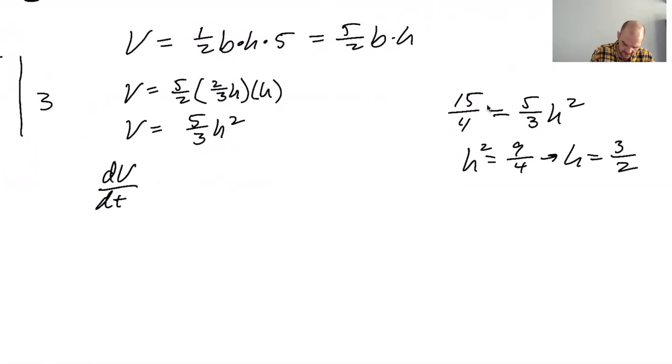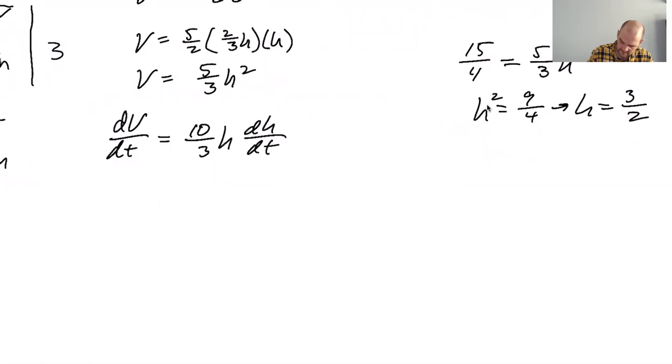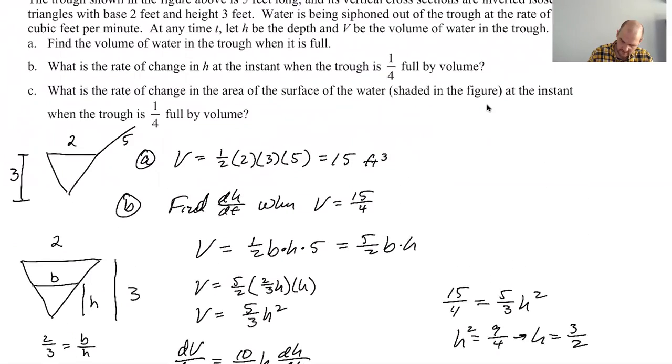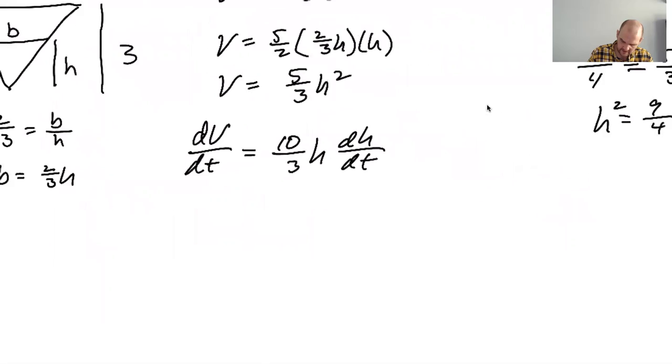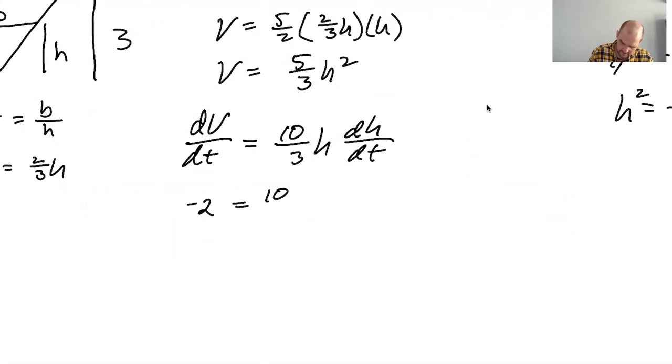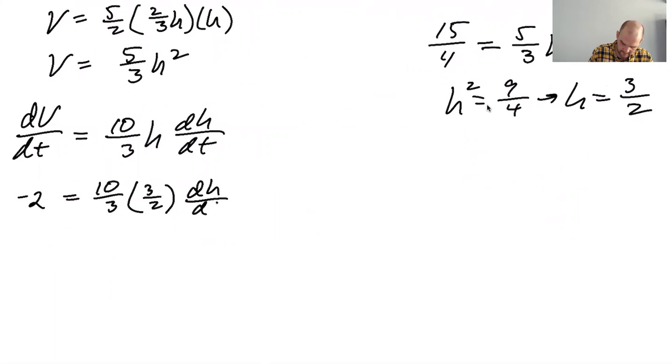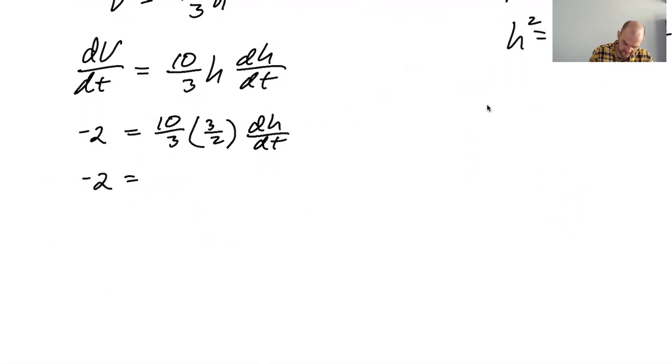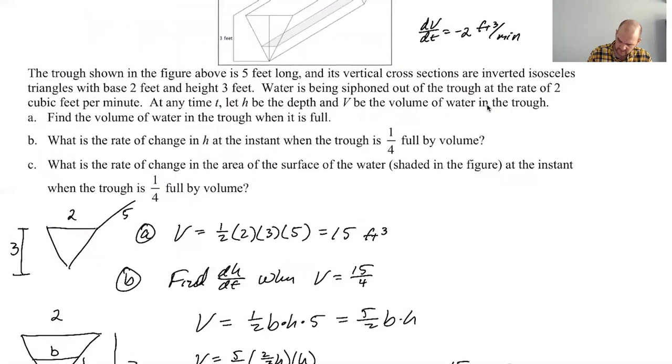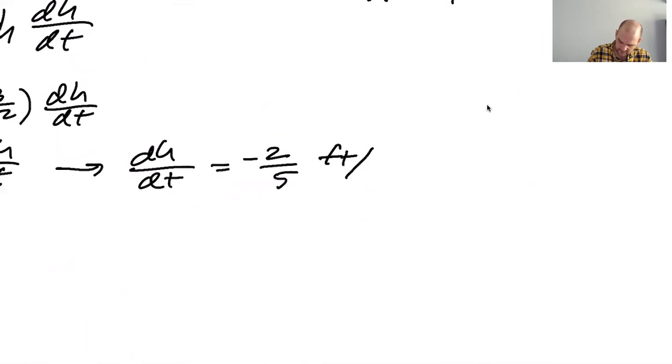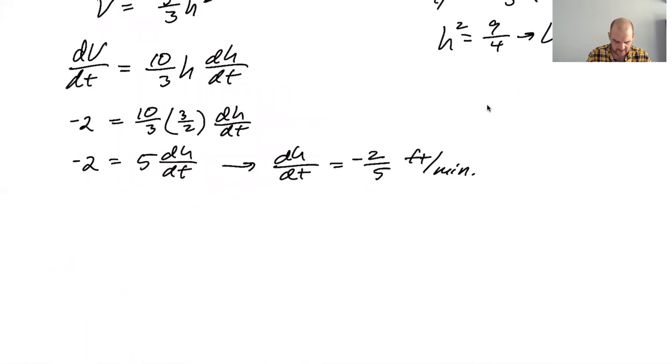And we sub in things we know. dV/dt I believe we were told is negative two cubic feet per minute. So negative two is 10 thirds h, which we just think we found to be three halves, times dh/dt. Okay, so then negative two is five dh/dt. It's like a nice looking answer so maybe it's right. It's negative two fifths feet per minute.